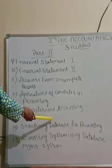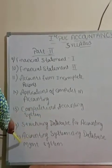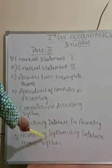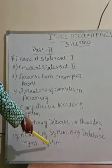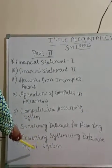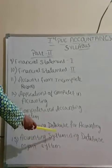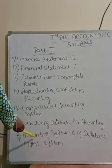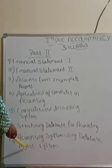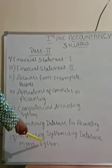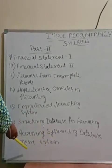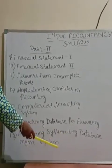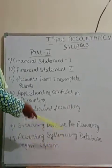Chapter 15 is Accounting System Using Database Management System — MS Access — and its components. We will cover creating tables and relationships for an accounting database, using forms, using queries, and generating accounting reports. The last topic is preparing and generating the report.